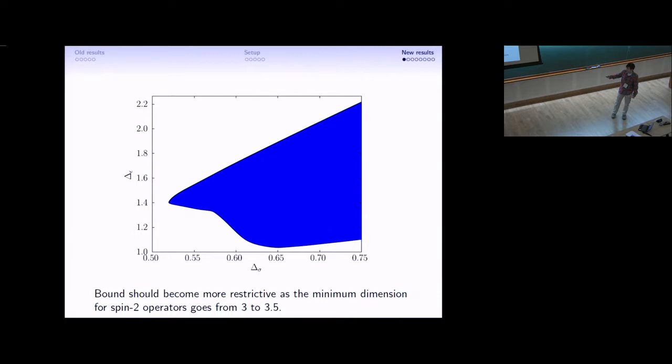The next step is to make this more restrictive, to see if we can find a kink somewhere on the interior. The way that we do that is we raise the gap for spin 2 operators. So, if we set it to 3.1, the functional doesn't need to be positive on conformal block vectors of dimension 3 anymore, and therefore, it's easier to find a functional, it's easy to rule out points, and we get a more restricted region.